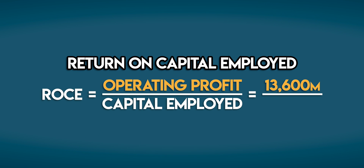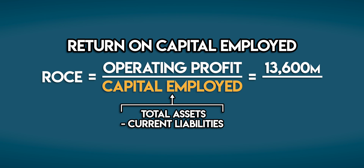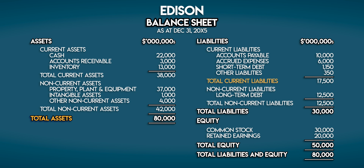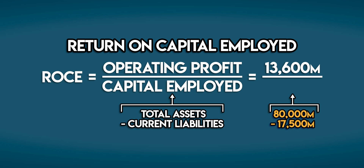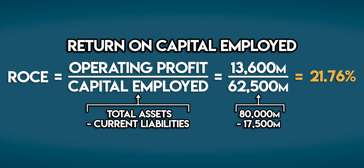Now, what is capital employed? Capital employed is the money injected into a business — it's made up of owner's equity and long-term debt. We can calculate capital employed by taking total assets minus current liabilities, both found on the balance sheet. Edison's total assets are 80 billion dollars and their current liabilities are 17.5 billion, so capital employed is 62.5 billion dollars. Edison's return on capital employed is 13.6 billion divided by 62.5 billion, which is 21.76 percent.